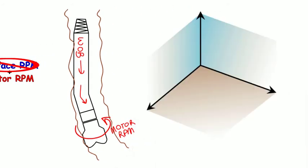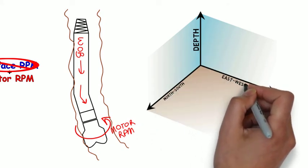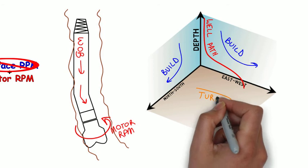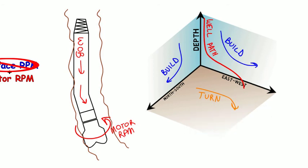During an interval of sliding, or a slide for short, angle is accrued in the well. Steering away from vertical is referred to as build. Steering side to side is called turn.